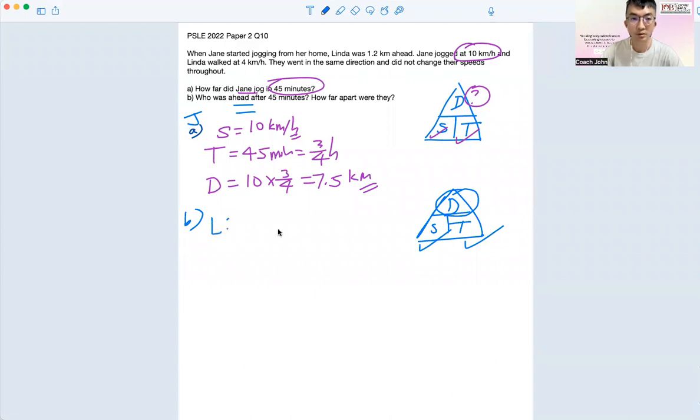Right, so for Linda, we have speed, which is walking at 4 km per hour, and time is 3 over 4 hour. So for the distance covered, it'll be 3 over 4 times 4, and we have, that's 3 km.